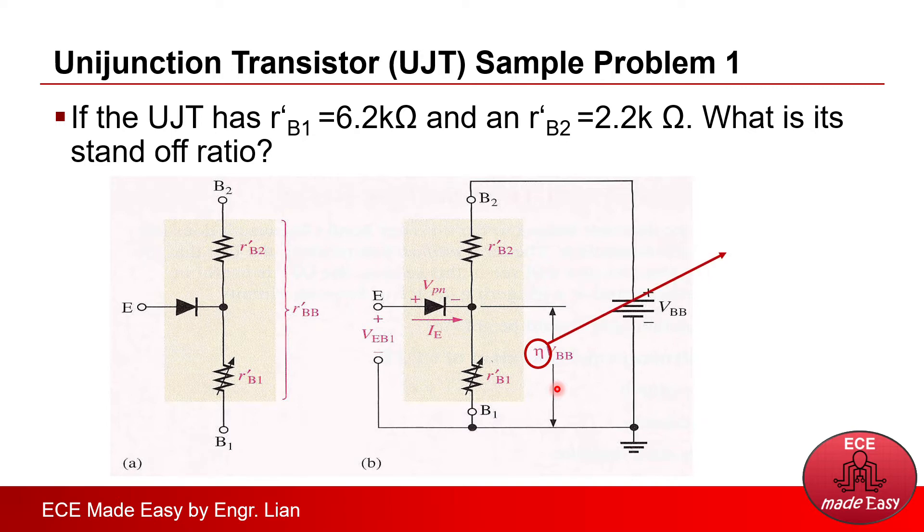And recall that the formula for eta, or for the standoff ratio, is actually the ratio of RB1 versus the total resistance across this UJT, or RB1 all over RB1 plus RB2.